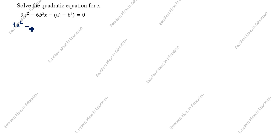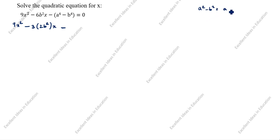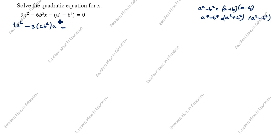In the second method: 9x² minus — how will we split this? — 3×(2b²)×x. Multiply inside the bracket: 3×2b² = 6b²x. Now how will we split a⁴ minus b⁴? Using a²−b² = (a+b)(a−b), we get a⁴ minus b⁴ = (a²+b²)(a²−b²). We will split this one as per this formula: (a²+b²)(a²−b²) = 0.